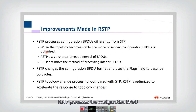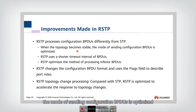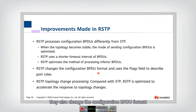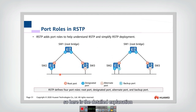RSTP processes the configuration BPDU differently from STP. When the topology becomes stable, the mode of sending configuration BPDU is optimized. RSTP also uses a shorter timeout interval and optimizes the method of processing inferior BPDUs. They also changed the configuration BPDU format and used the flags field to describe the port role.